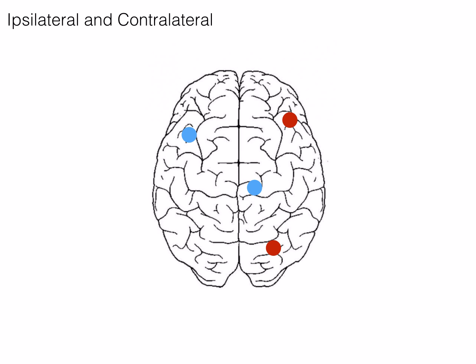As you progress, you will notice a lot of these terms are incorporated into the names of structures, such as the ventral striatum, dorsal root ganglion, and lateral geniculate nucleus.